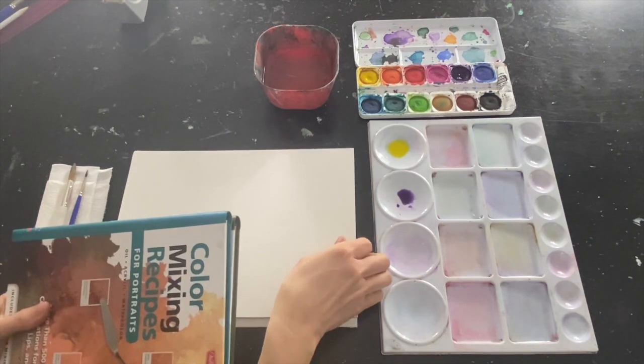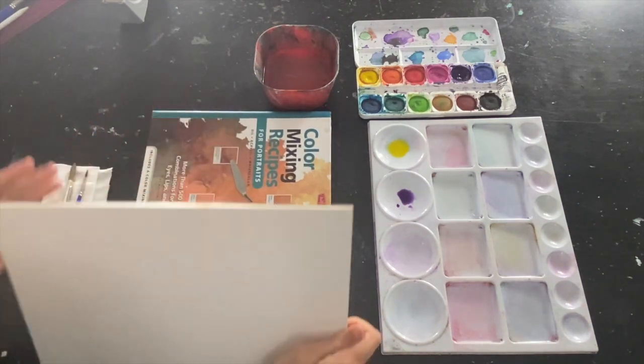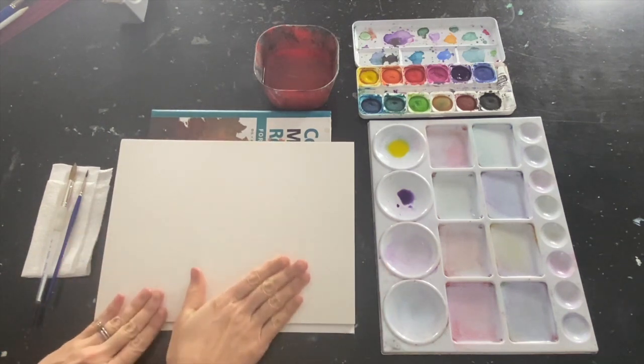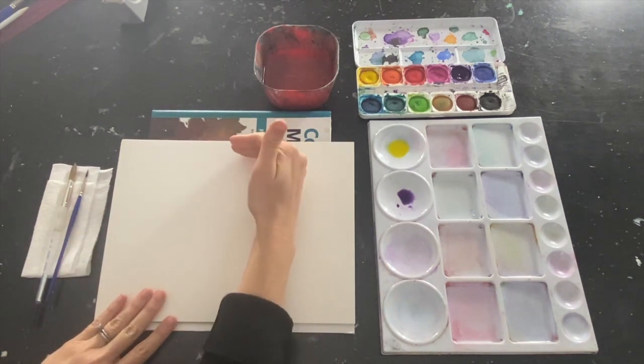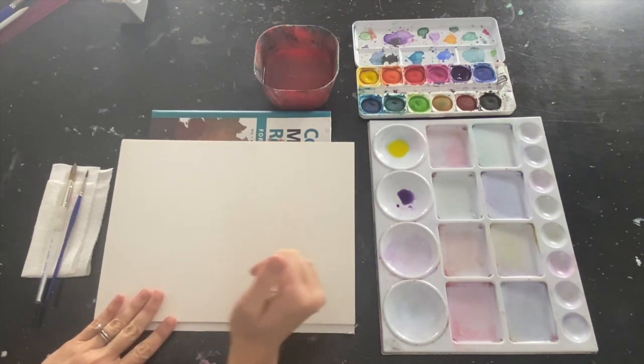Now when I work with watercolors, I like to have a slight angle, and so what I'm going to do is just take a couple little books, put them under my paper so I have this slight angle going down. The reason is, I want the water to fall down and gravity will pull it in this direction as I work.